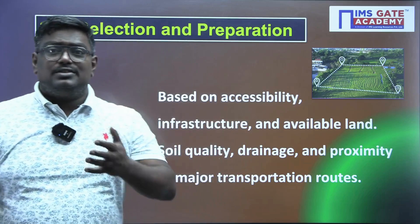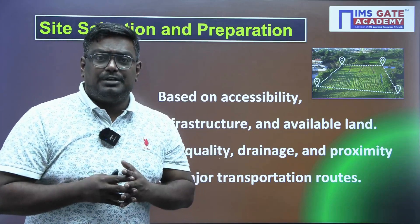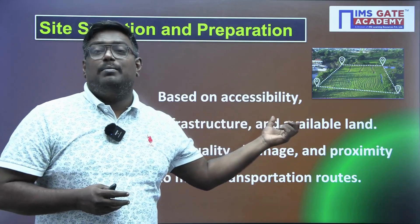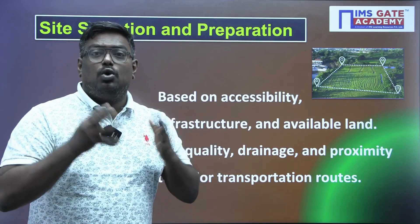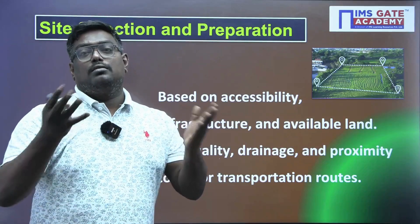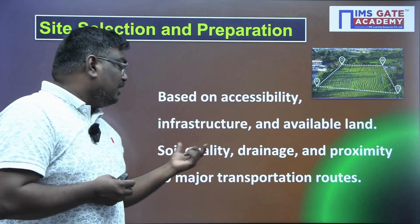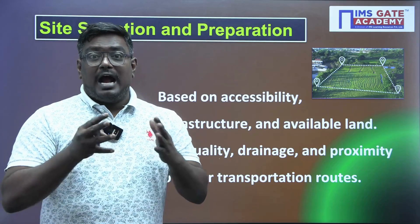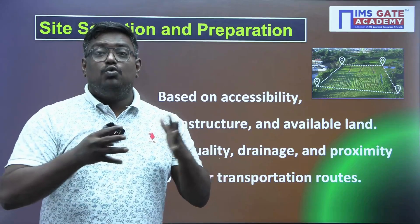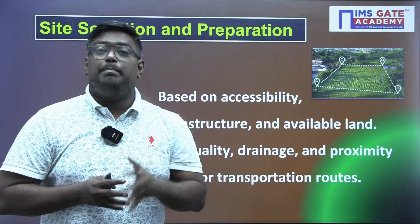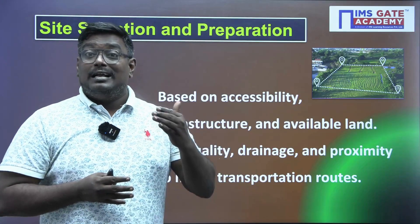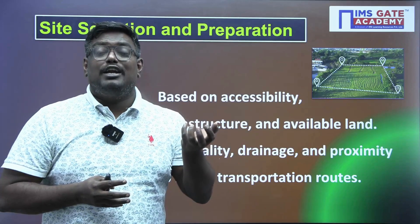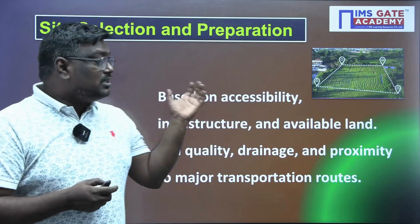Whenever you are preparing a stadium, you have to first do site selection and preparation. This is based on accessibility, infrastructure, and available land, because accessibility plays a very important role as a lot of crowd will be willing to attend the match. Soil quality, dryness, and proximity also play a major role. The soil should be favorable, and regarding dryness, if there is any rain, the water should drain off quickly. In any sport like cricket or football, the ground should have the ability to squeeze off the water and drain off quickly.